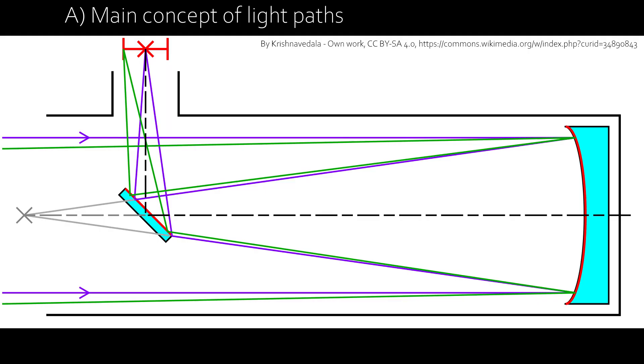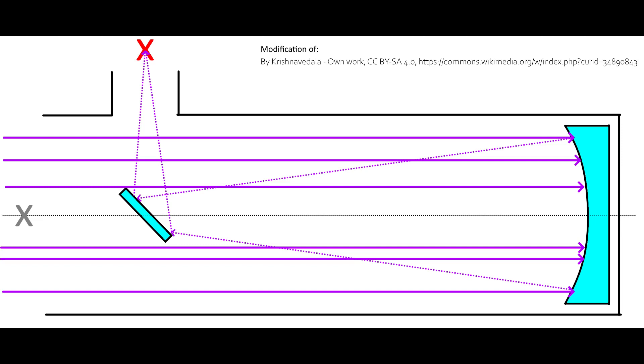First, the main concept of light paths. Here you can see the schematic of a Newtonian telescope. You see the light entering from far, far away, thus it's parallel, running through the tube and hitting the main mirror on the back side. This mirror is parabolic and has the ability to reflect light in such a way that every beam is focused in the focal point.